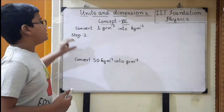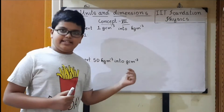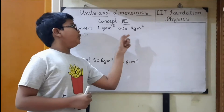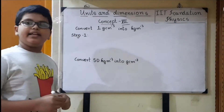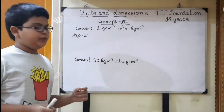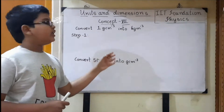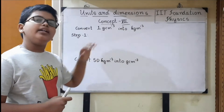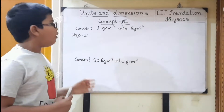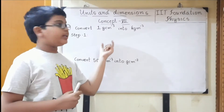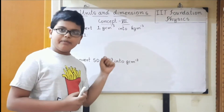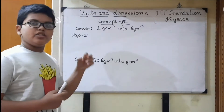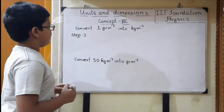First, let's convert some units for density. Convert 1 gram per centimeter cube into kg per meter cube. There are two steps to convert any unit: first, convert the given unit into SI unit, and then convert it into the desired system of units. The SI unit for density is kg per meter cube, and they asked to convert only into the SI unit, so there is no step 2 — only step 1.